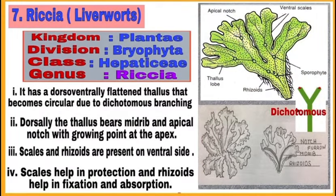Marchantia, liverworts or bryophyta: it has a dorsoventrally flattened thallus that becomes circular due to dichotomous branching. Dorsally, the thallus bears a mid-rib and an apical notch with a growing point at the apex, while scales and rhizoids are present on the ventral side. Scales help in protection and rhizoids help in fixation and absorption. After writing the characteristic features, draw the diagram as shown with a sharp pencil and label the different parts.